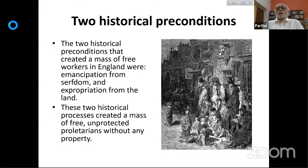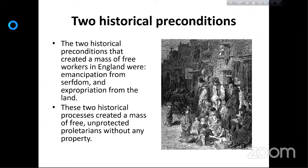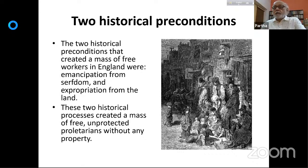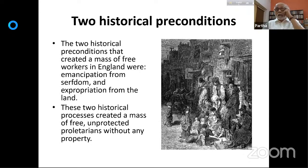So how did this mass of free workers emerge in England? Marx discusses two historical preconditions: one, the emancipation from serfdom, and two, the expropriation from the land. These two historical processes created a mass of free, unprotected proletarians without any property.